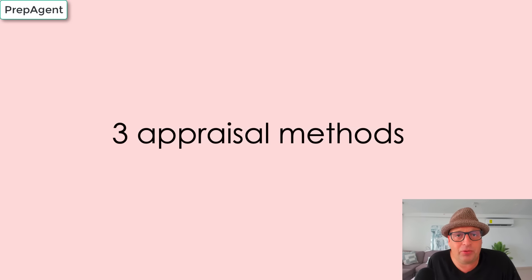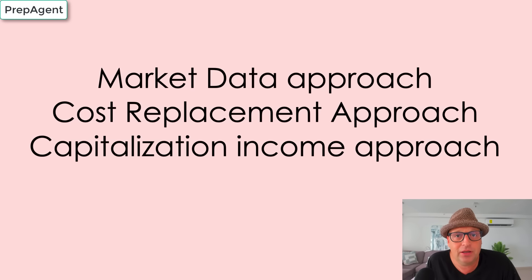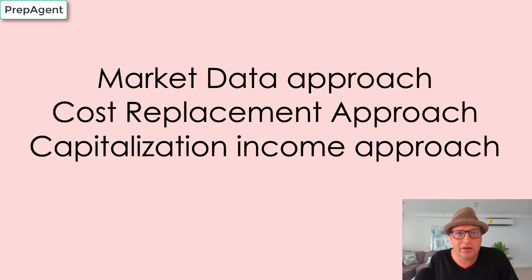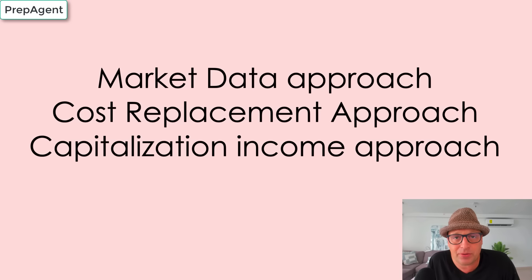Next up, we've got the three appraisal methods: the market data approach, the cost replacement approach, and the capitalization income approach. The market data approach simply uses comps — if one property is $100,000 and the one next to it is very similar, that one's going to be about $100,000 too. That's the basic one most real estate agents use. The cost replacement approach finds value by looking at how much it would cost to replace the building brand new, and is typically used for special purpose properties such as libraries, schools, and police stations.